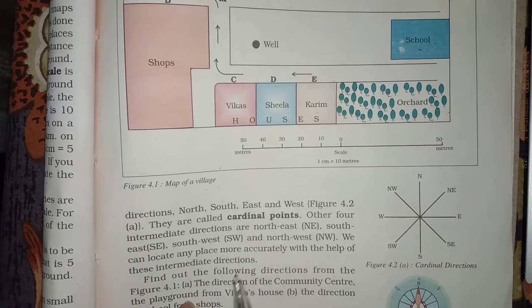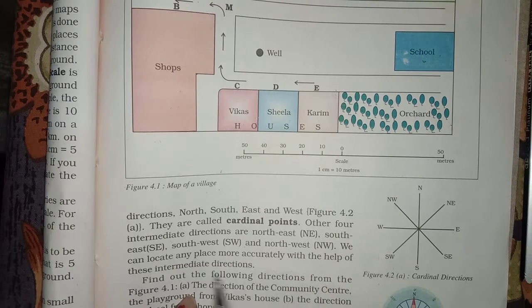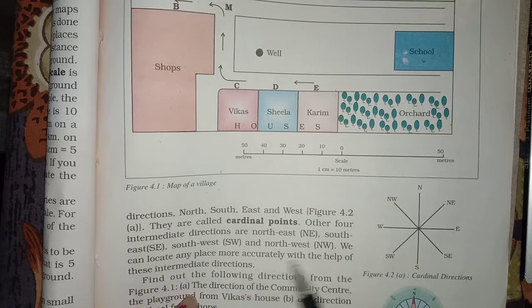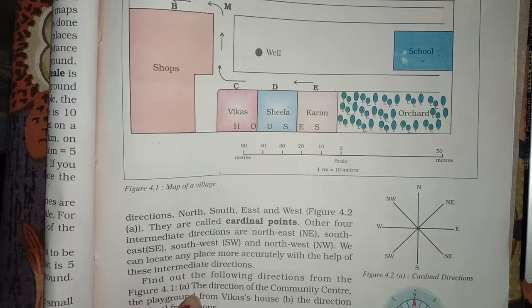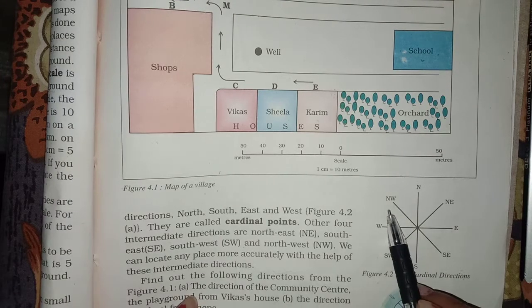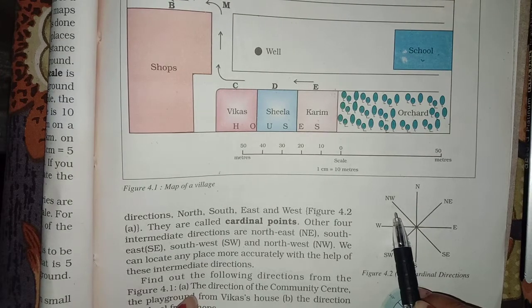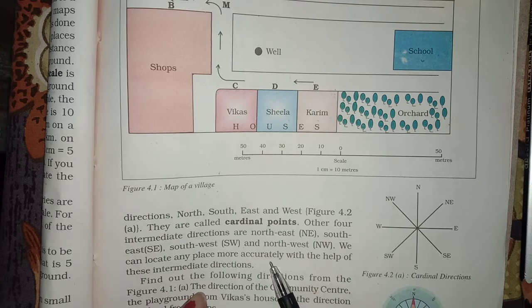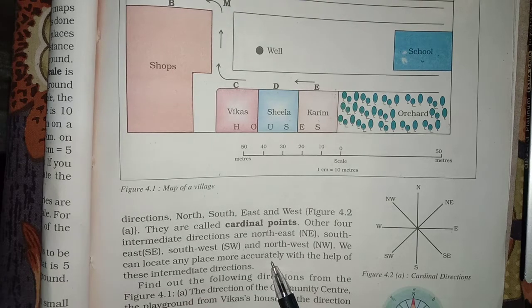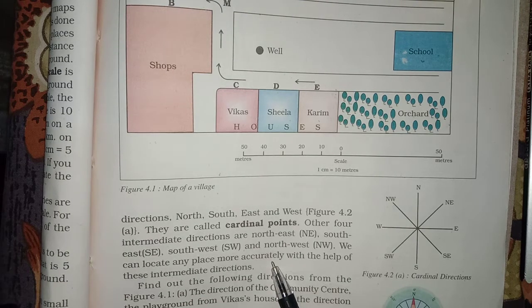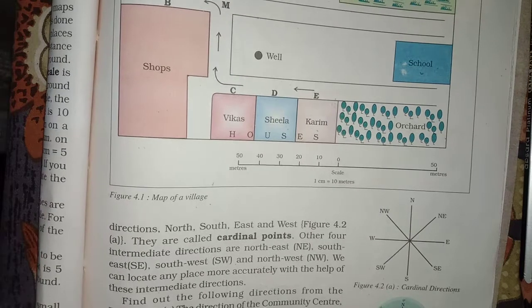We can locate any place more accurately with the help of the intermediate directions. When we know the intermediate directions, then we can locate any place more accurately.